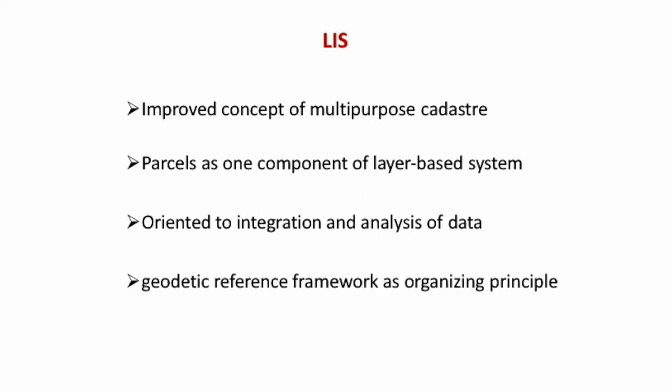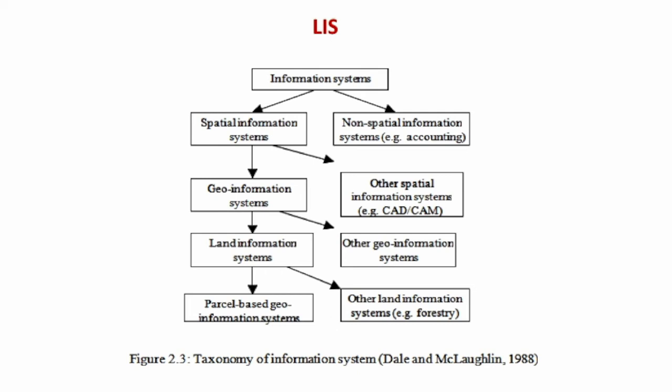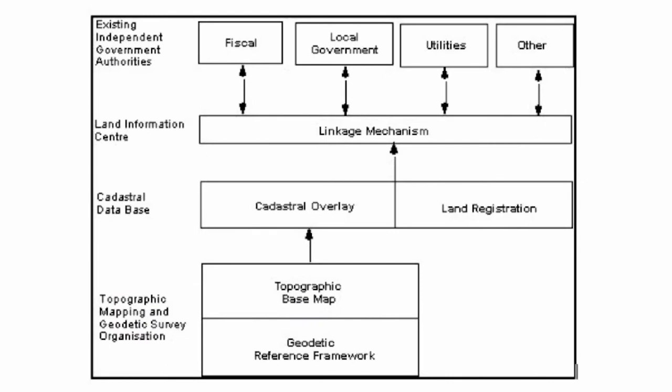LIS provides orientation for integration and analysis of data with geodetic reference as an organizing principle. As proposed by the taxonomy of information systems (Dale, 1988), an information system should consist of spatial and non-spatial components — spatial being geo-information systems covering land, flood, and environmental aspects, linked to parcel information such as forest, river, and road data. This overall information forms a land information system. The main role is for fiscal purposes governed by local government, along with utility and other purposes. When linked in an information center, it provides a cadastral database including land registration, topographic mapping, and geodetic framework — a complete set of land information.